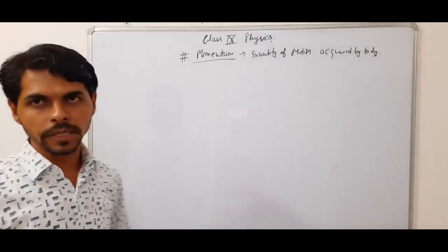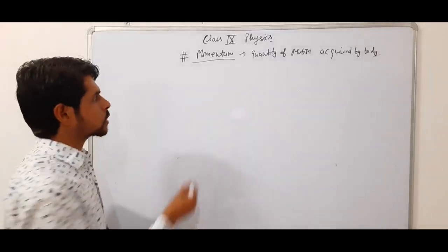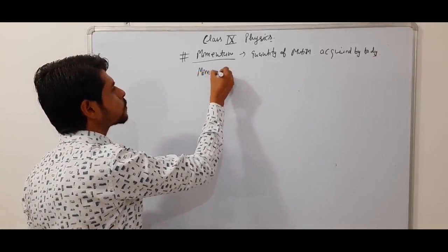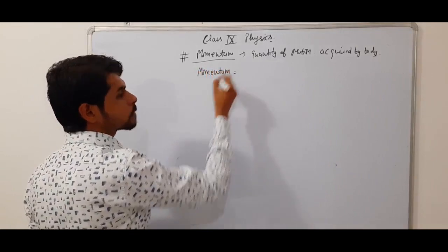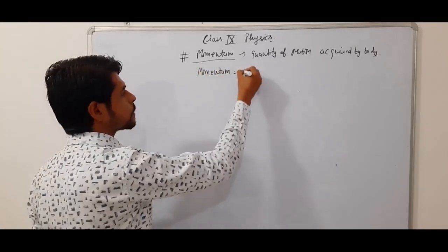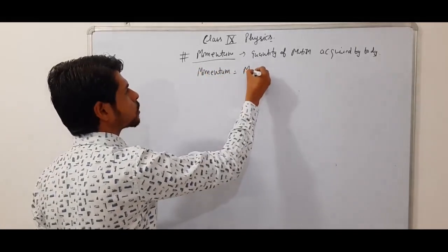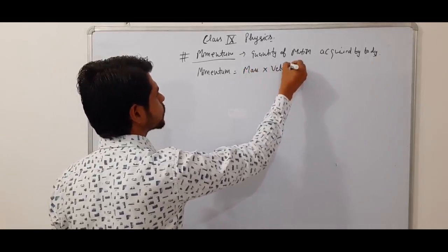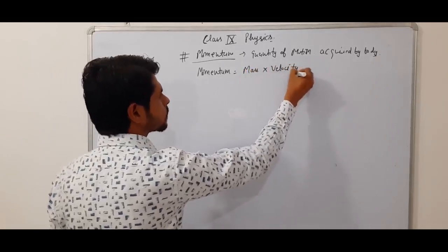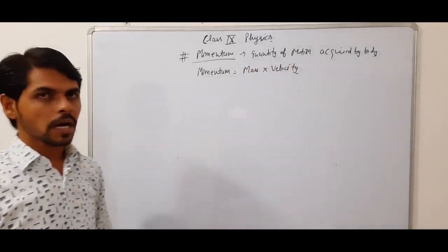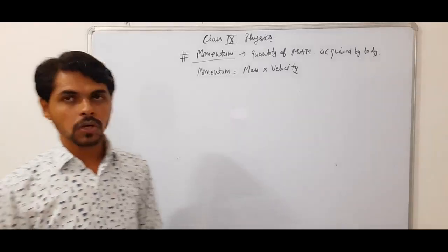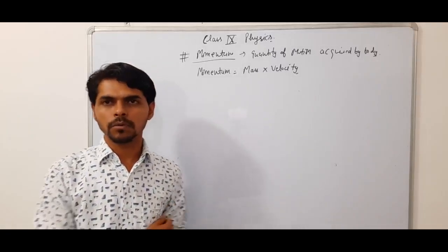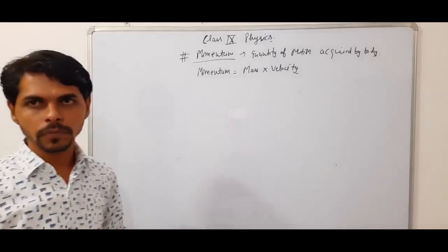That is called its momentum. If you want to calculate the momentum of a moving body, the formula is: momentum is the product of mass and velocity of the body.